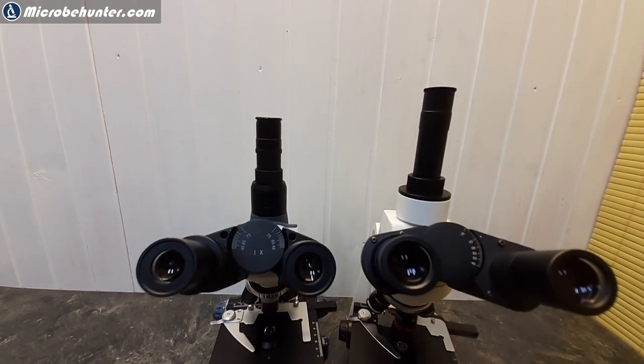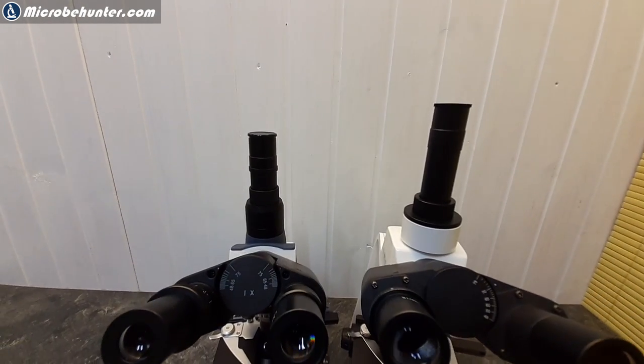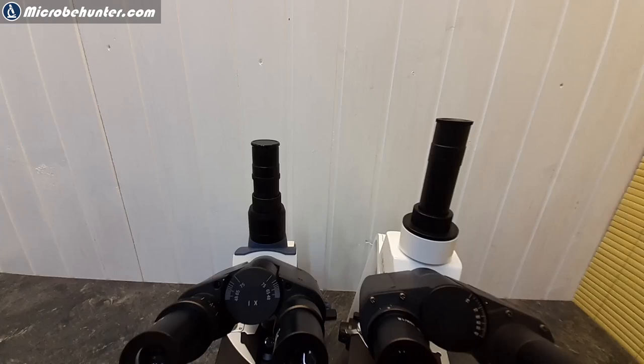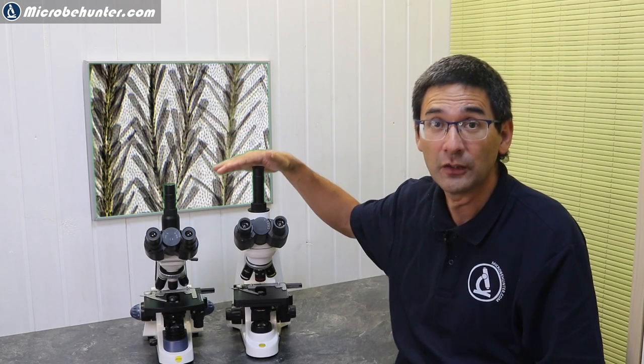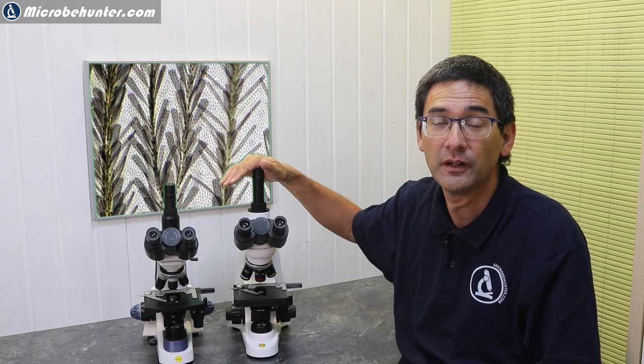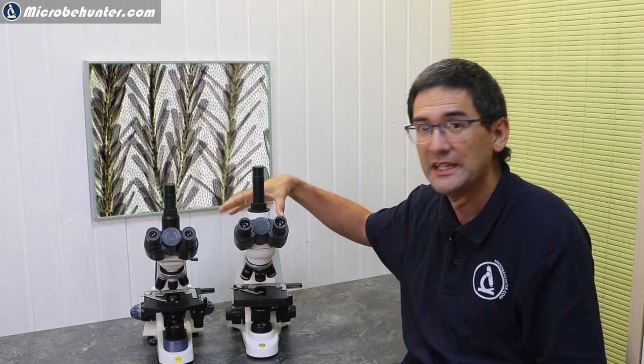Size is of course important, but also is mass. Both of them have a similar weight. The 380T has approximately four kilograms. The Stellar One is a little bit heavier with four and a half kilograms, also because it is here on the side a little bit wider.